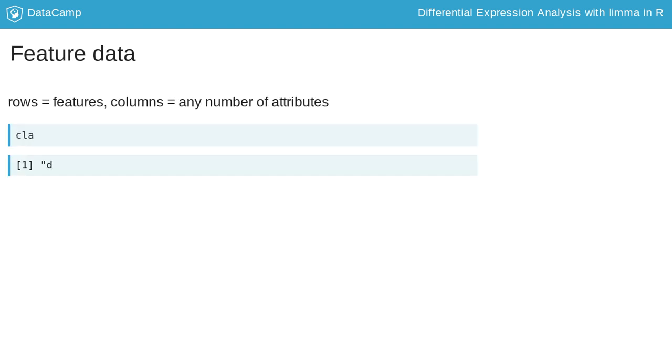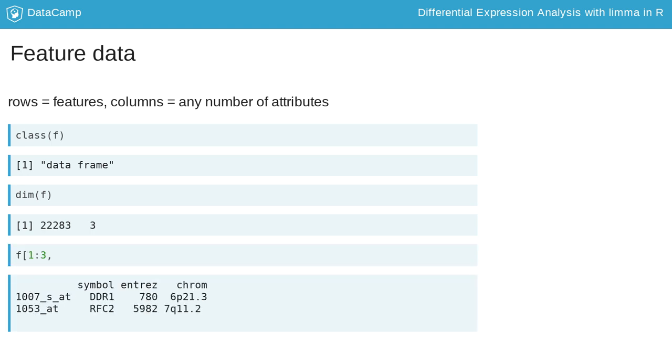The feature data is a data frame with one row per feature. Thus its number of rows is equal to the number of rows of the expression matrix. The columns describe the features, in this case genes. Here the columns correspond to the gene symbol, the database identifier, and the chromosomal location in the genome.